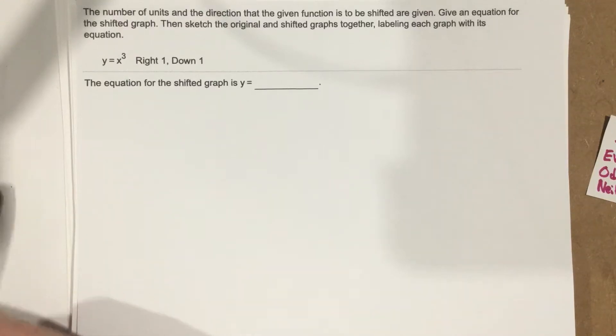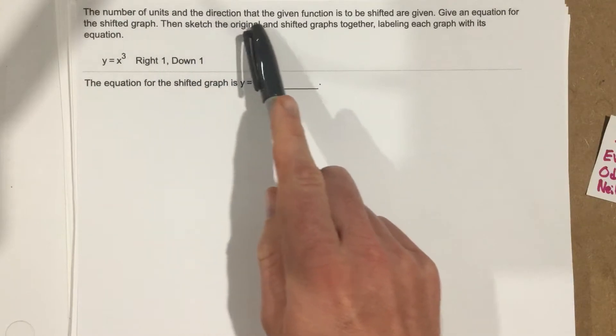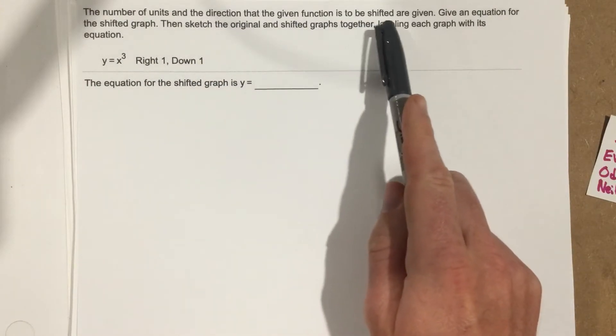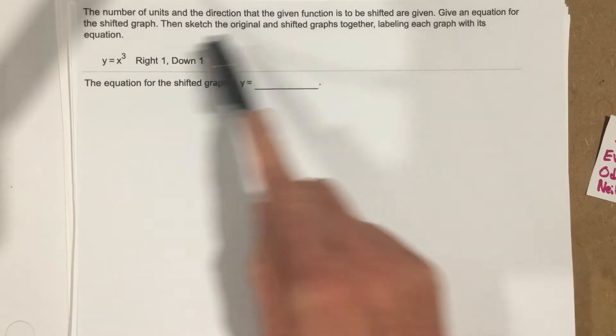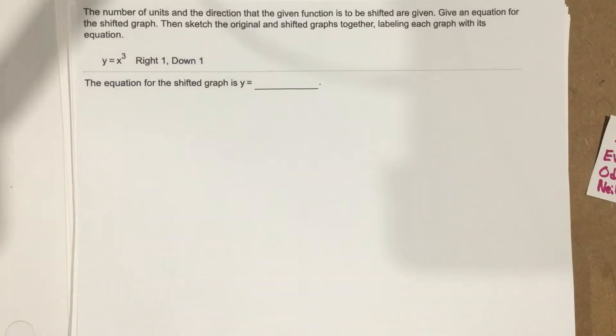This is problem number 6 from section 1.2. The problem states: the number of units and the direction that the given function is to be shifted are given. Give an equation for the shifted graph, then sketch the original and shifted graphs together, labeling each graph with its equation.